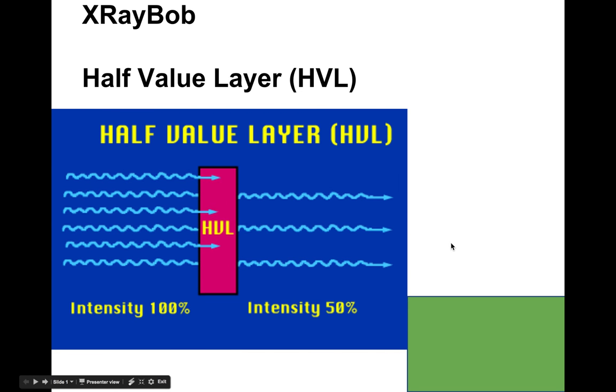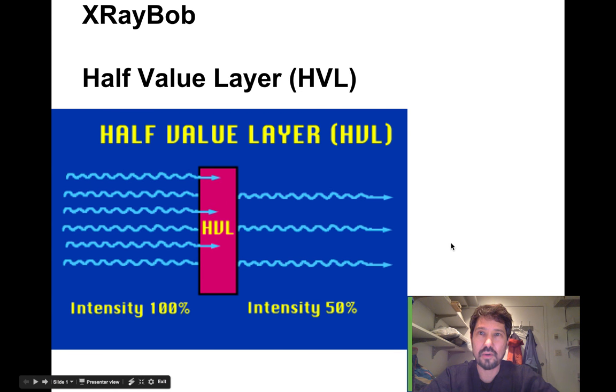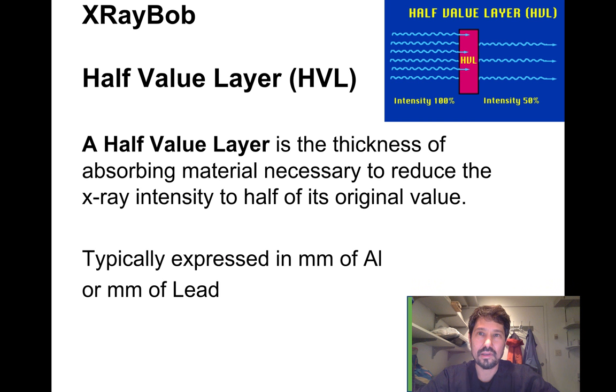It's X-Ray Bob here and today's topic is going to be half value layers. A half value layer is the thickness of an absorbing material necessary to reduce the x-ray beam intensity to one half of its original value.